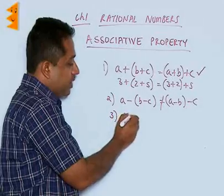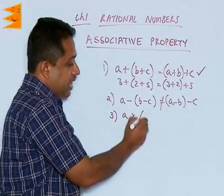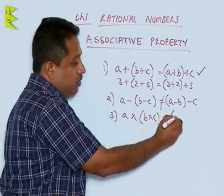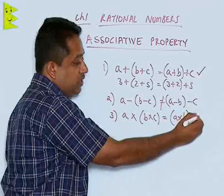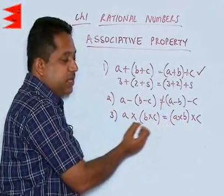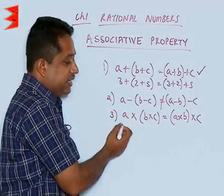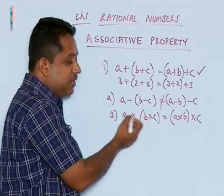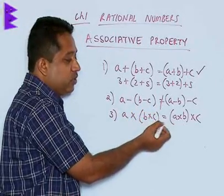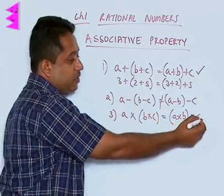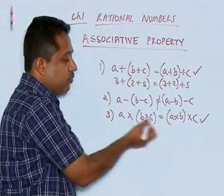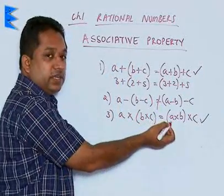Again, let us try for multiplication: is (A into B) into C equal to A into (B into C)? If you substitute any value of A, B, and C, you will find that the order of multiplication does not matter. Wherever we put the bracket, the answer is going to be the same. So, we can say that the associative property is true for multiplication as well.